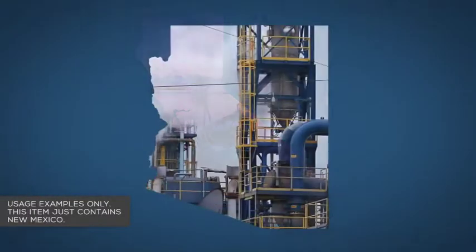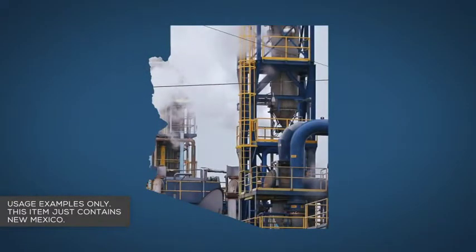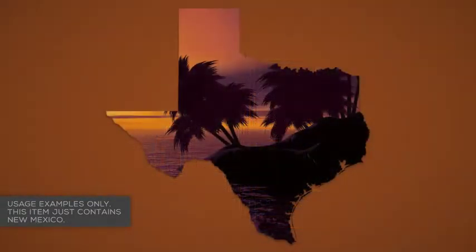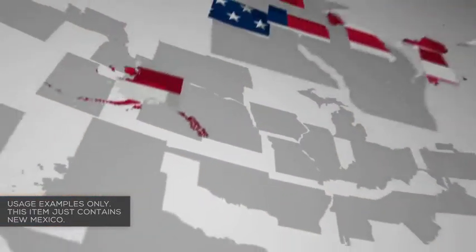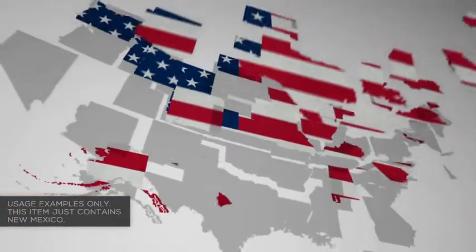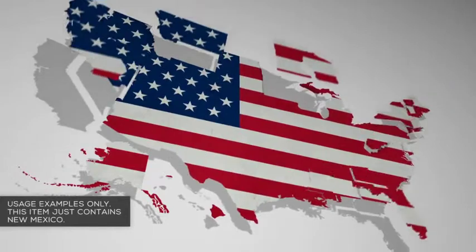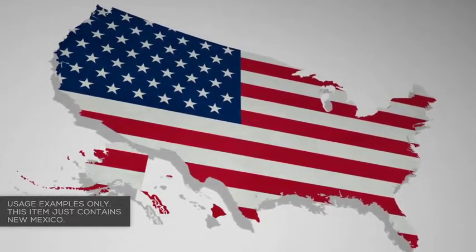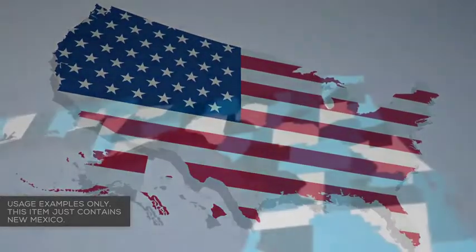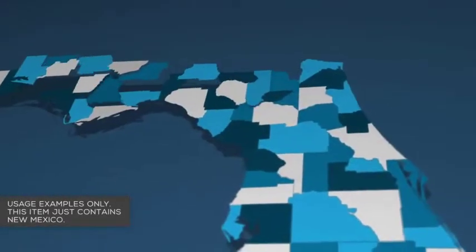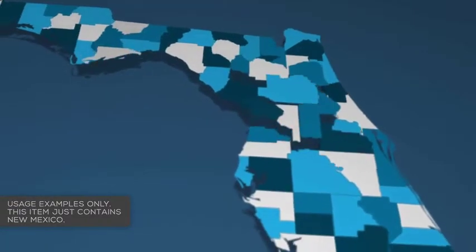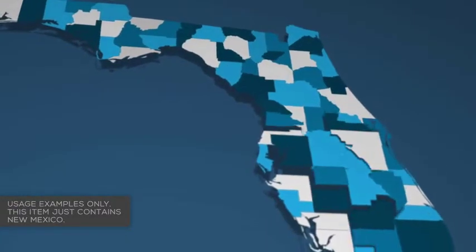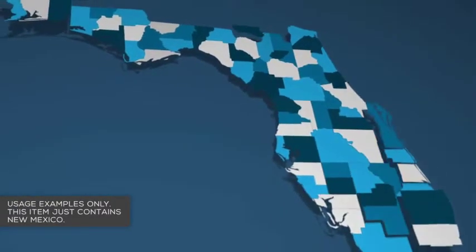Use your own content as a texture for the state — images, footage, whatever you need. Highlight counties with different colors to match your branding and to represent whatever you need the map to represent. Or get creative and add your own animations and images into the texture layers.